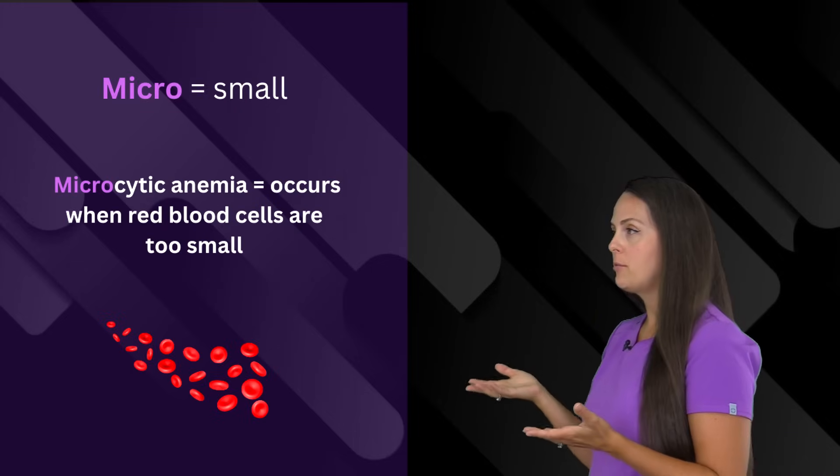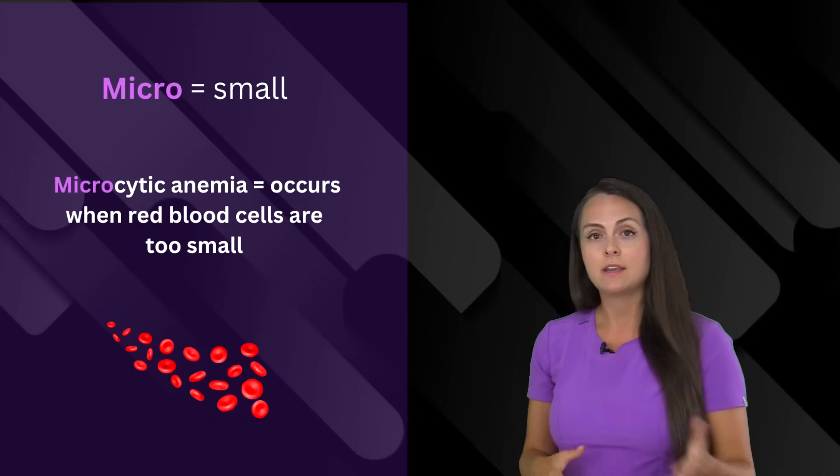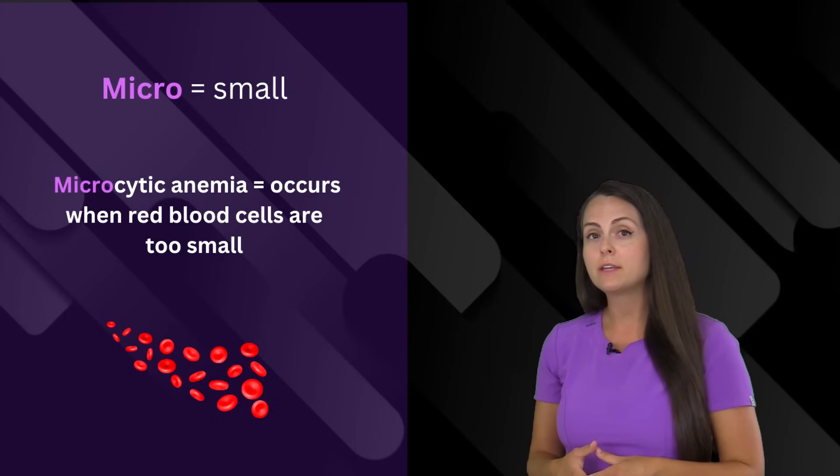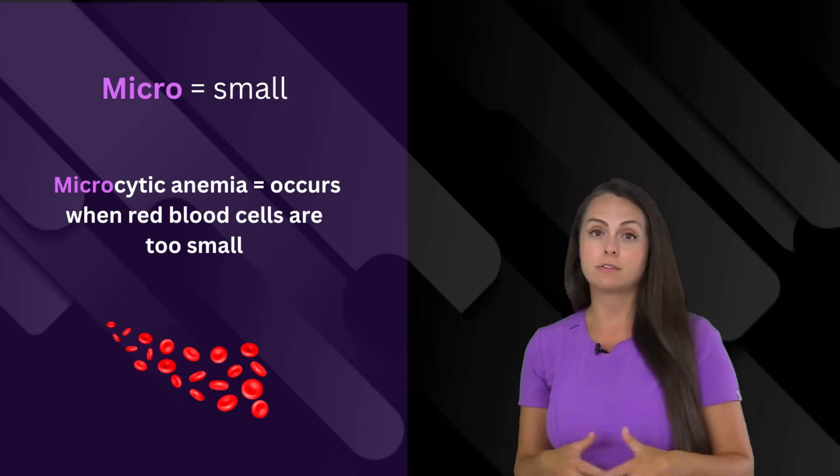And here we have micro, which means small. So if I say a person has microcytic anemia, this is where their red blood cells are way too small, which is the opposite of macrocytic.